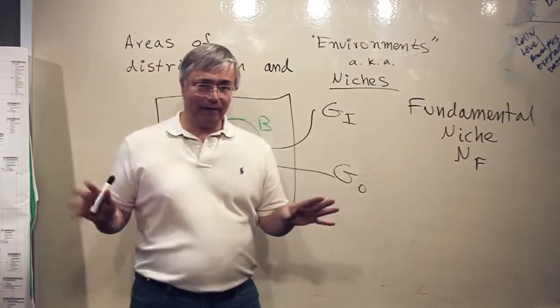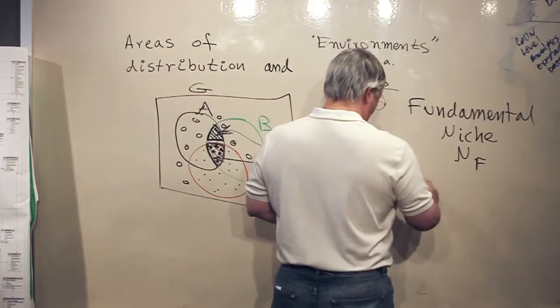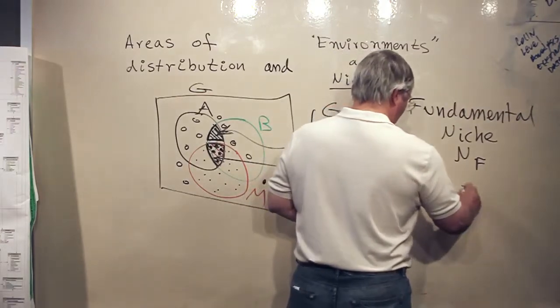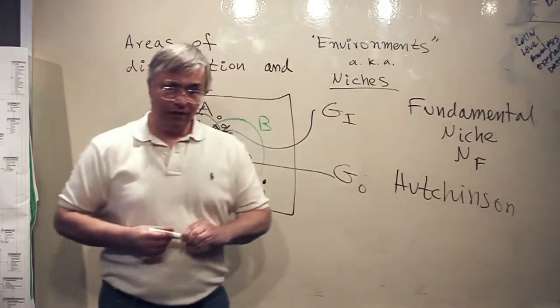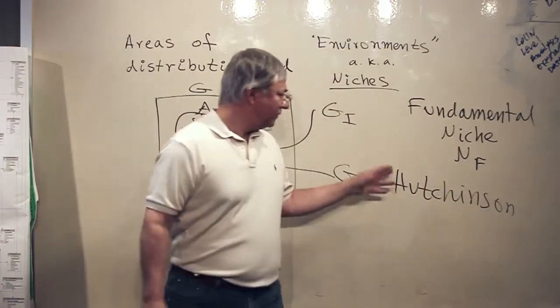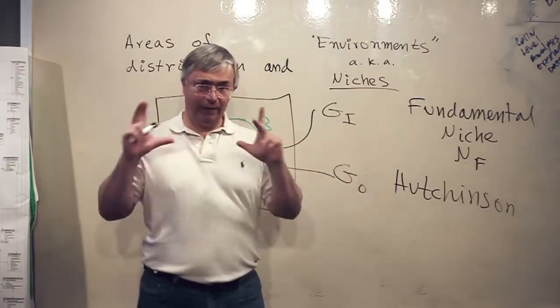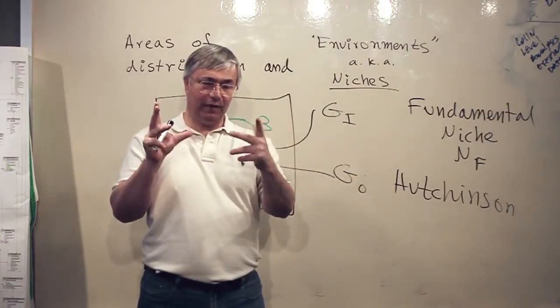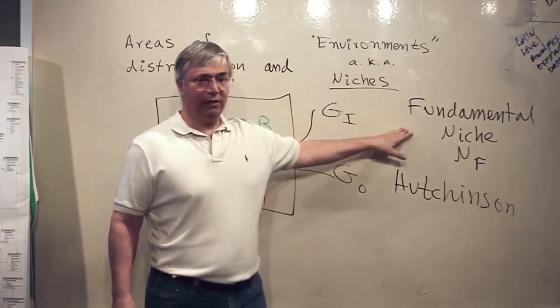It's a multivariate space due to George Evelyn Hutchinson, a great ecologist of the 40s, 50s, and 60s. He invented both the idea that you can see the niches in a multivariate space and this idea of the fundamental niche.